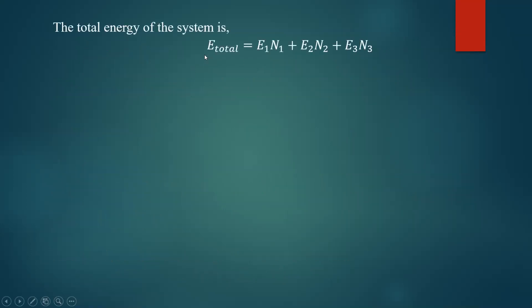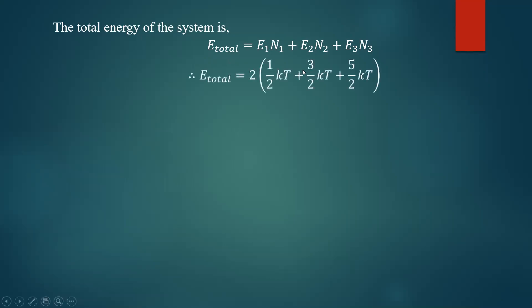Find the total energy. The total energy of the system is given by E_total equals E1·n1 plus E2·n2 plus E3·n3. Since n1, n2, and n3 are all equal to two, the factor of two can be taken out. Adding the energies: half kT plus three-halves kT plus five-halves kT gives nine-halves kT, and multiplying by two gives a total energy of the system equal to 9kT.